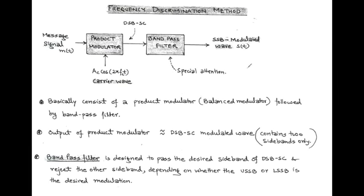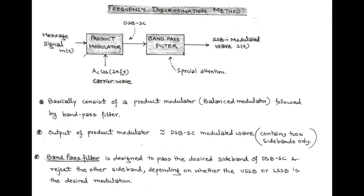We first discuss the frequency discrimination method, also called the filter method. This method basically consists of a product modulator, which is a type of balanced modulator, followed by a bandpass filter. Special attention is given to this bandpass filter, which is specially designed for the generation of single sideband. The input of the product modulator is the message signal and carrier wave, and the output is double sideband suppressed carrier. After passing through the bandpass filter, we get a single sideband modulated wave, S(t). The designing of the bandpass filter is most important, as it passes the desired sideband of DSB-SC and rejects the other.